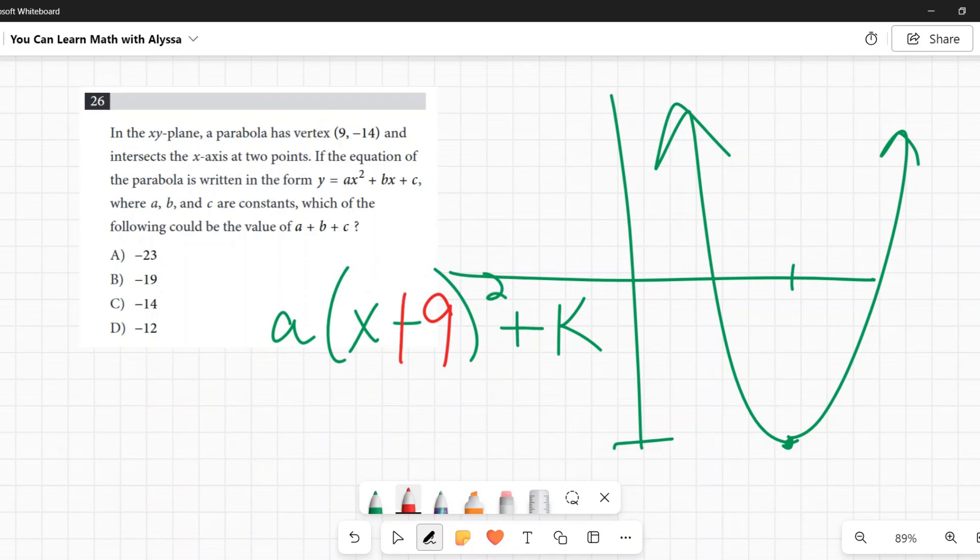No, that minus is part of this formula. The h is all by its little lonesome. So it's a positive 9, so you plug in a positive 9 there, leave that minus alone. Out here, the k is negative 14. So I'm going to plug that in here, negative 14.